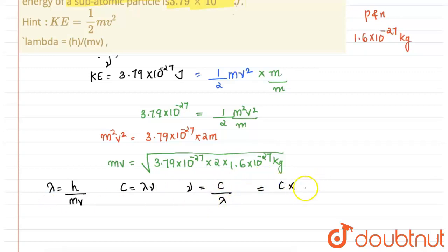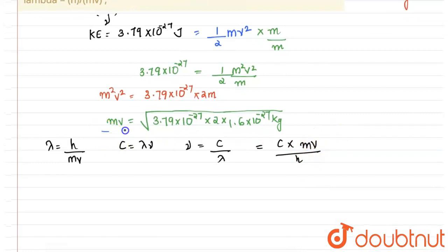Now we are going to substitute this lambda's value here, so that will be equal to c × mv divided by h. Now we have the value for mv which we calculated here, and we know that h is Planck's constant which has a value of 6.626 × 10^-34.